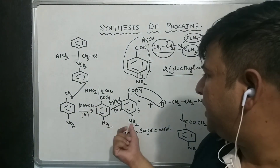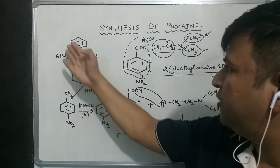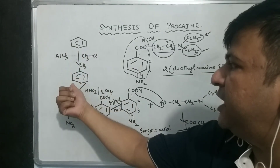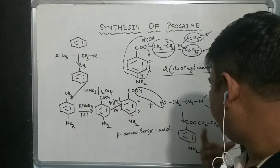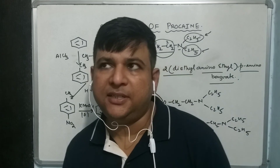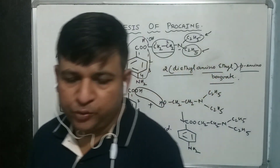You can directly make procaine starting from para-aminobenzoic acid, or you can start from benzene, or from toluene — wherever you begin, the synthesis is complete. Thank you.